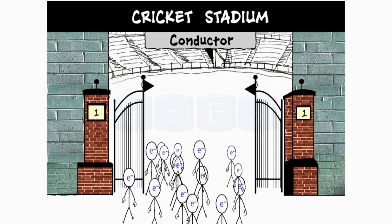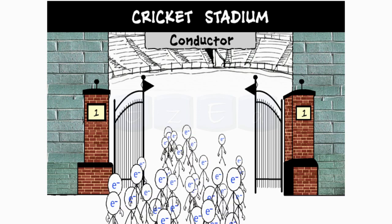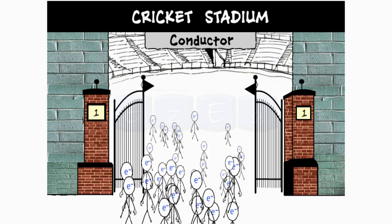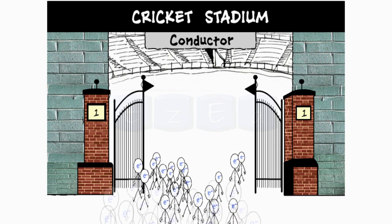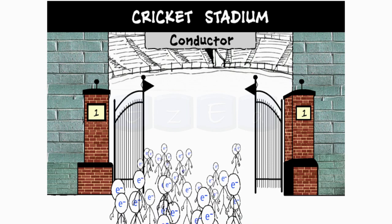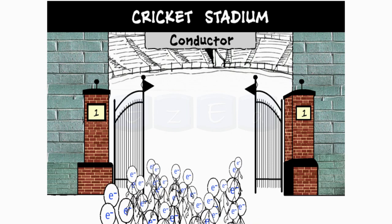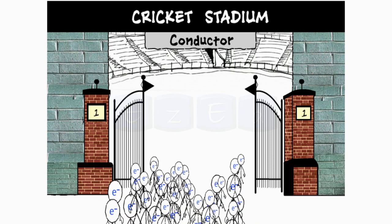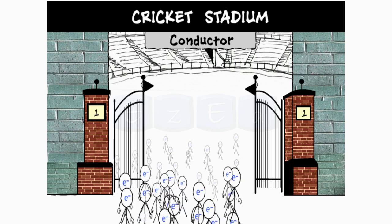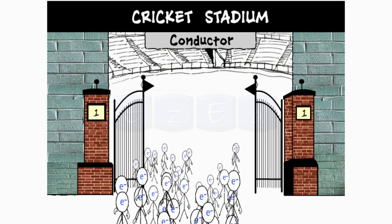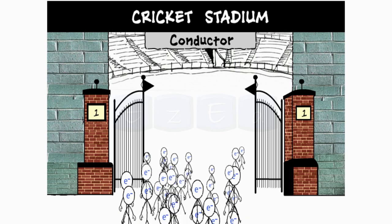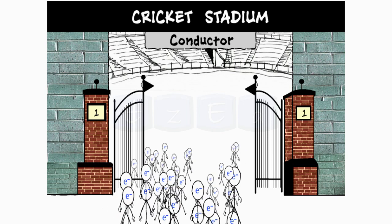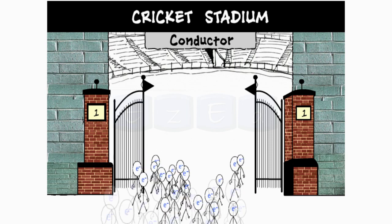Now let's further understand this with an example of a stadium entrance and people. Let's imagine the stadium entrance to be a conductor and the people as current. We can see a large group of people passing through the gates and entering the stadium easily — in the same manner in which conductors allow electricity to pass through them easily.